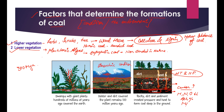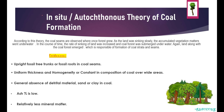Moisture content also decreases as coal matures. To summarize the key factors for coal formation: first, we need a swampy area with lots of water; second, we need rapid burial; and third, we need high temperature and high pressure.